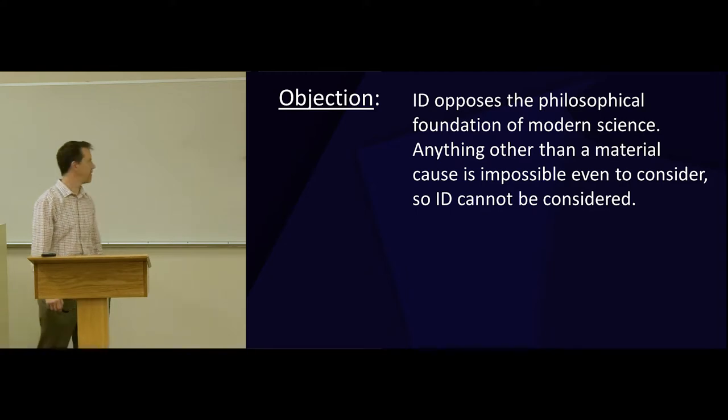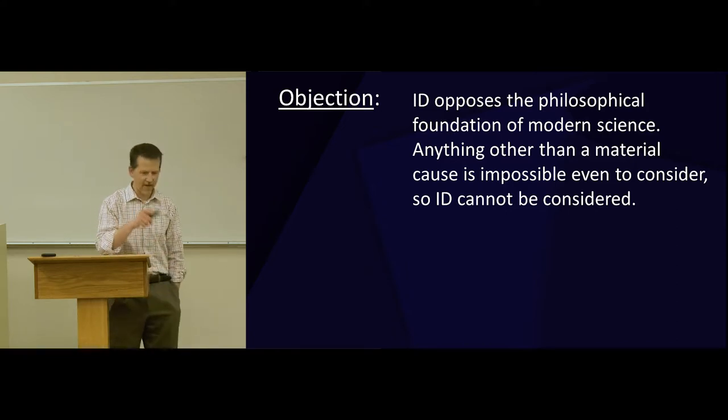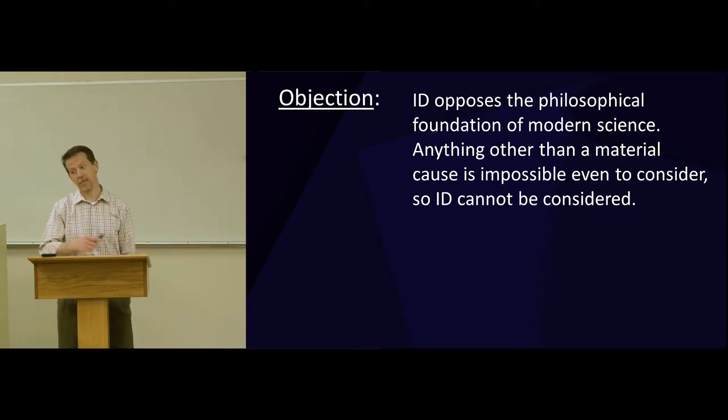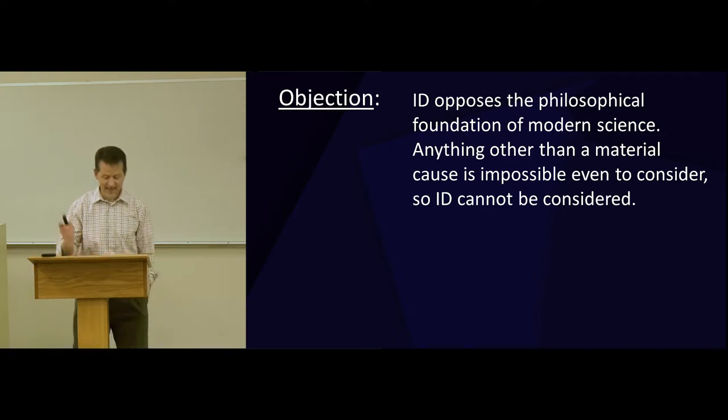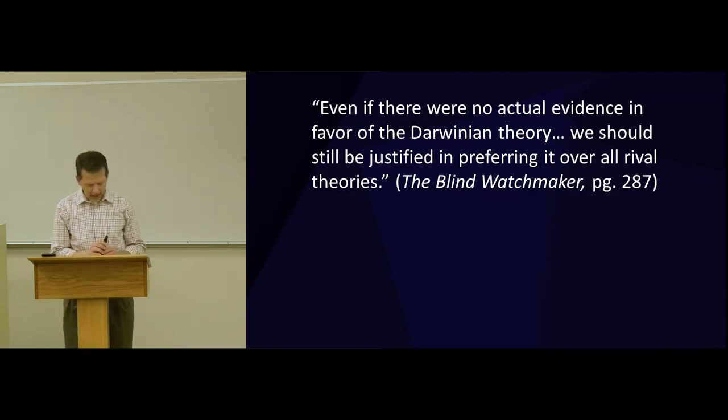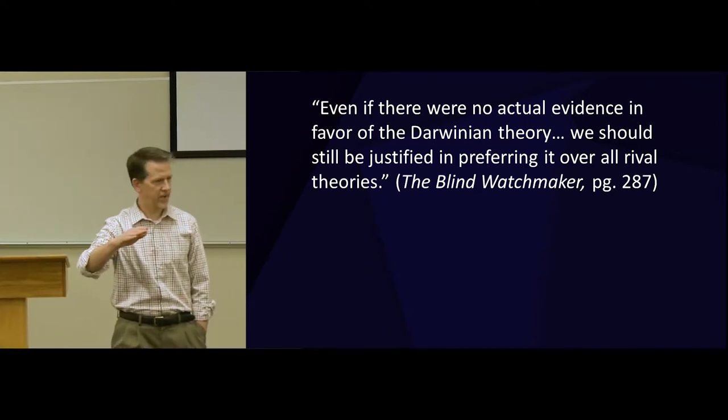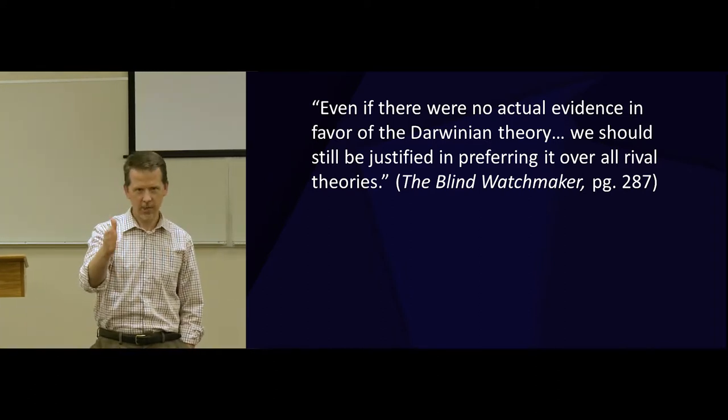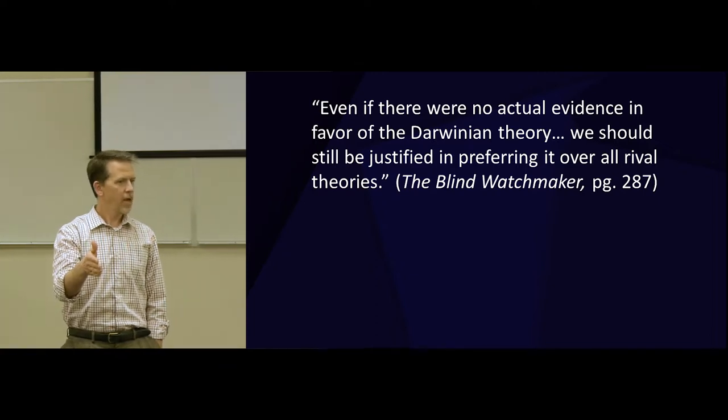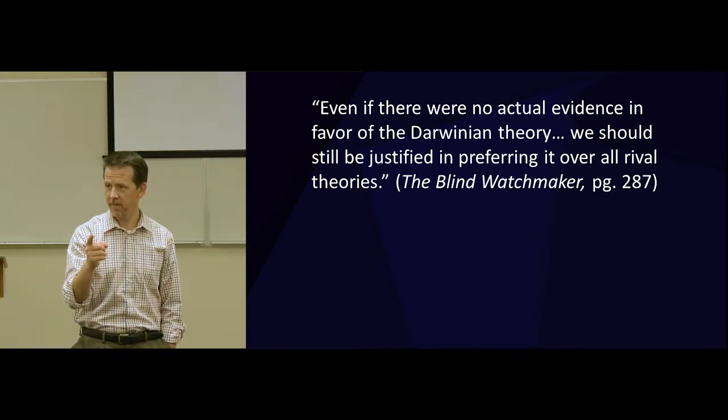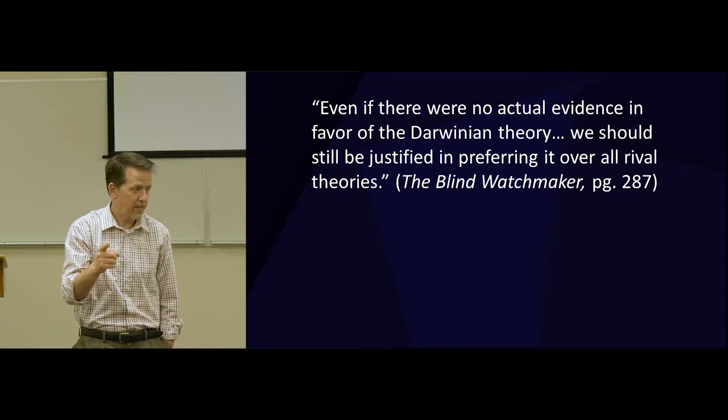We introduced this at the beginning of the evening for this reason. Science is built upon a philosophical belief. A belief that is not empirical. It is faith. And it fails to be this objective empirical discipline that it claims to be. In fact, it is founded upon it. And that is how you have quotes like this one, famously. Even if there were no actual evidence in favor of the Darwinian theory, we should still be justified in preferring it over all rival theories. How can you make that statement? Even if there were no evidence, it is the only theory that we should give credence to. How is that possible?